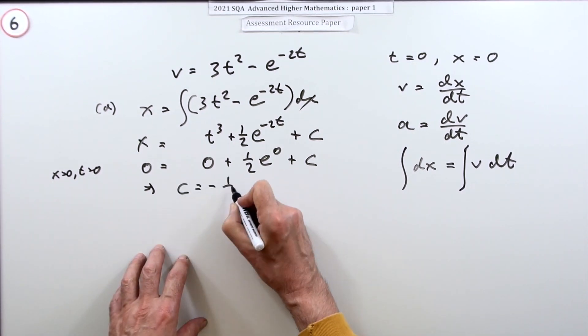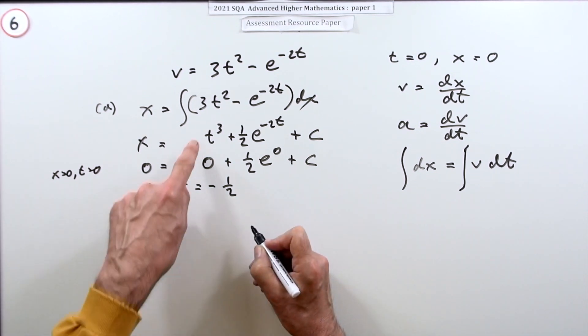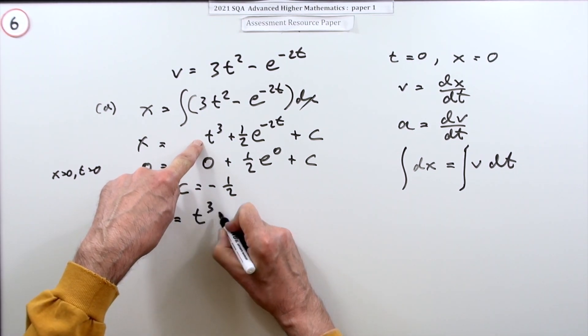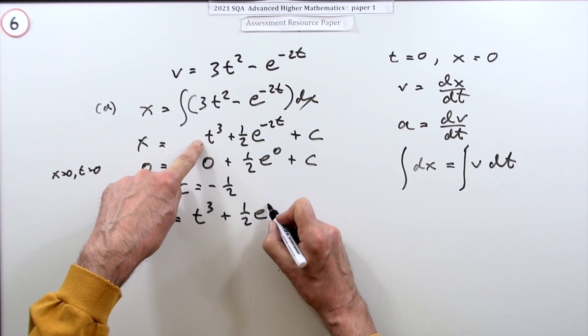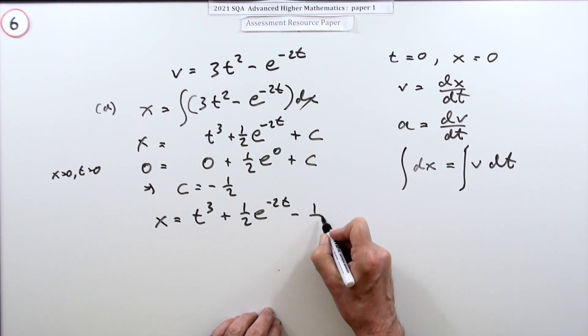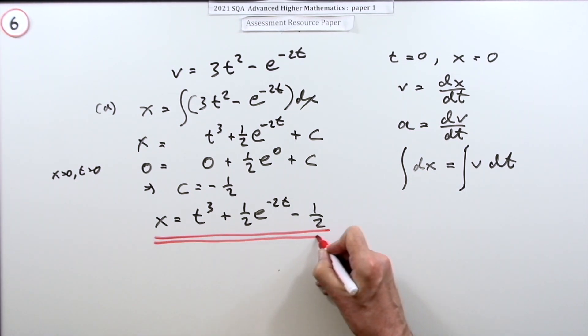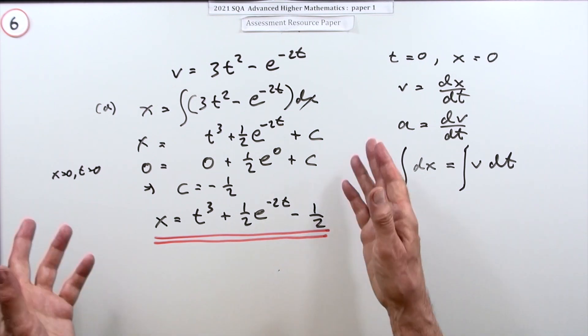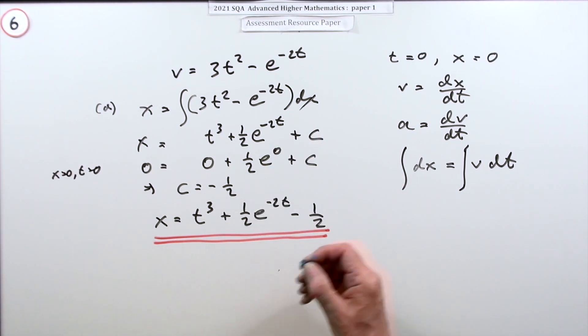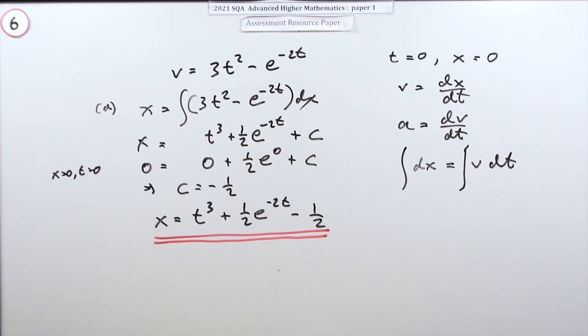Well, e^0 is just one, so that means c equals negative a half. Which means your final answer will be: going back to this, t³ + ½e^(-2t), and c was negative a half. They've actually got the marks as: starting to integrate for one mark, and finishing the whole thing off for the other.